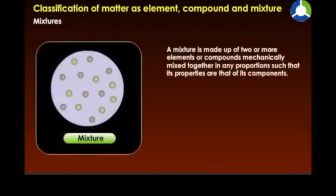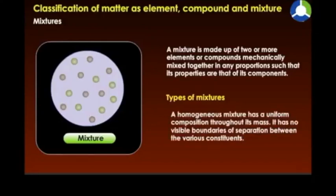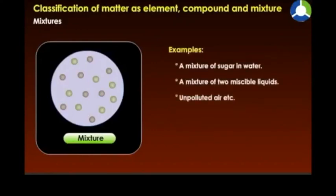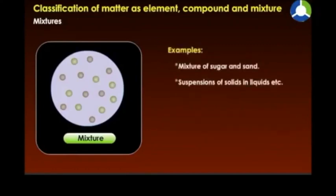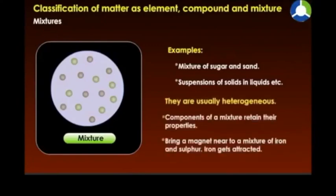A mixture is made up of two or more elements or compounds mechanically mixed together in any proportion, such that its properties are those of its components. A homogeneous mixture has a uniform composition throughout its mass with no visible boundaries of separation between the various constituents. Examples include a mixture of sugar in water, a mixture of two miscible liquids, and unpolluted air. A heterogeneous mixture does not have a uniform composition throughout its mass and has visible boundaries of separation between the various constituents. Examples include a mixture of sugar and sand, and suspensions of solids in liquids.